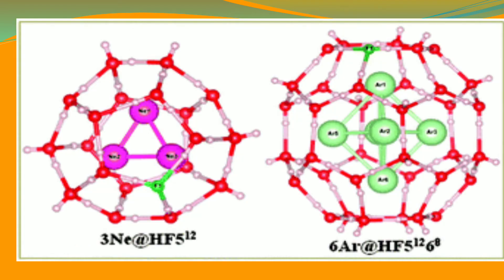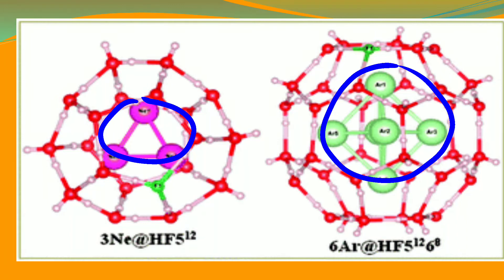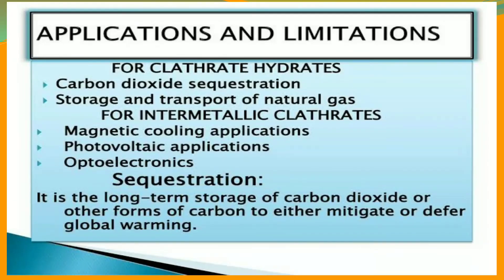These are some structures of the clathrate — a cage-like structure with noble gases trapped at the center. However, helium and neon are not used in clathrates because of their very small size, which prevents them from being trapped. This is a question frequently asked in NET and other examinations: why helium and neon are not used in clathrates.